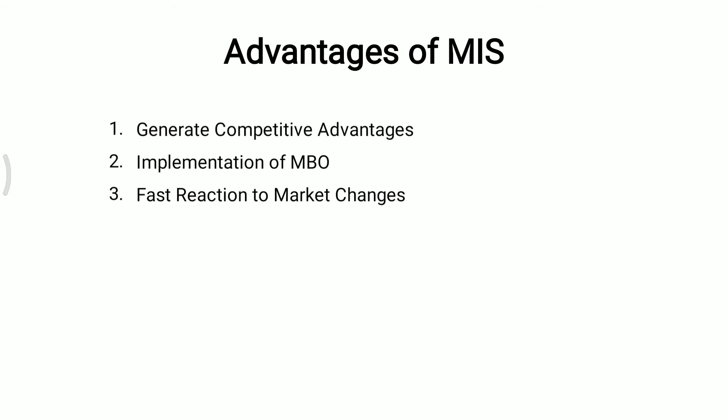Third is fast reaction to market changes. MIS can deliver facts, data, and trends to businesses with lightning speed. Having this information allows business houses to react quickly to market changes, regardless of the type — positive or negative — of viability. Fourth is MIS as a strategic resource. MIS helps in taking strategic, tactical, and operational decisions.